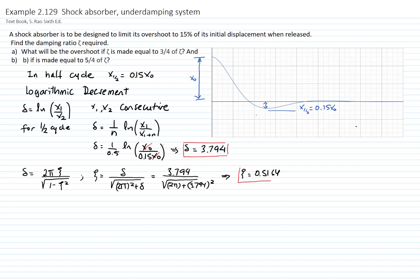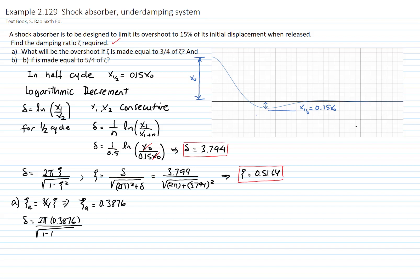Now that we have our damping ratio to achieve an overshoot of 15% of the initial displacement, let's see what happens if we reduce that damping ratio to three-fourths. So we have a new damping ratio that is less. If we have less damping, we can predict that our overshoot will be a little bit bigger. So let's verify that. We calculate again our logarithmic decrement — we substitute the new damping ratio into 2π times the new damping ratio divided by the square root of 1 minus the damping ratio squared.